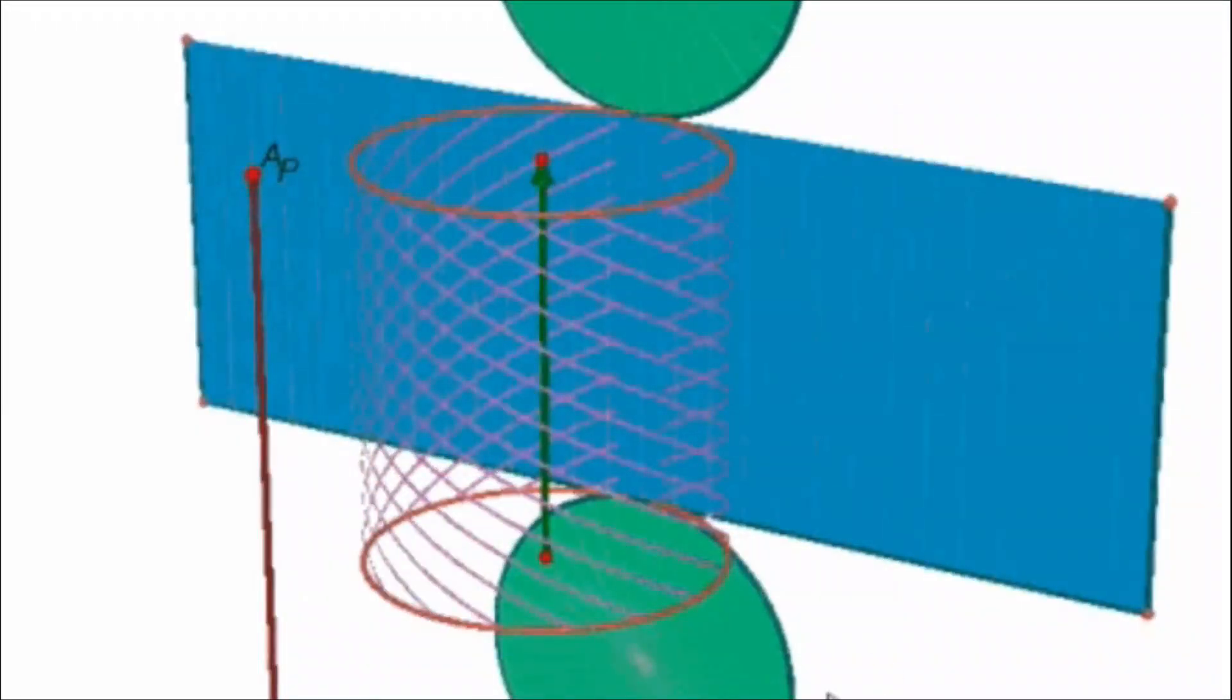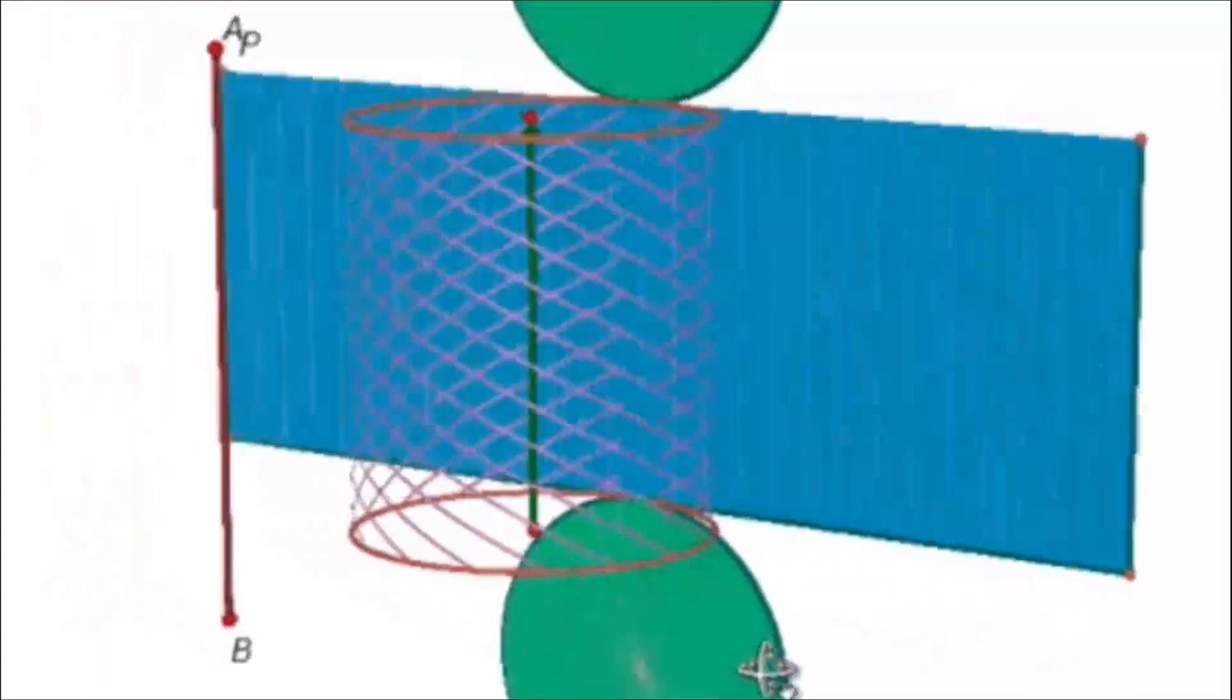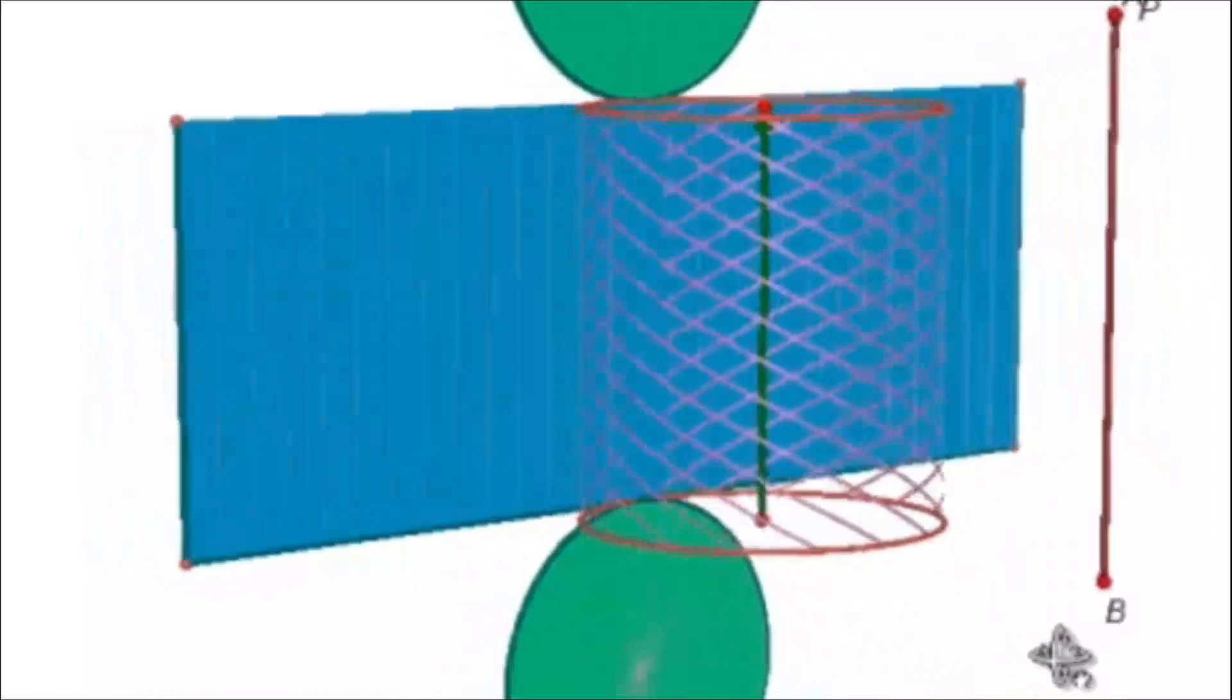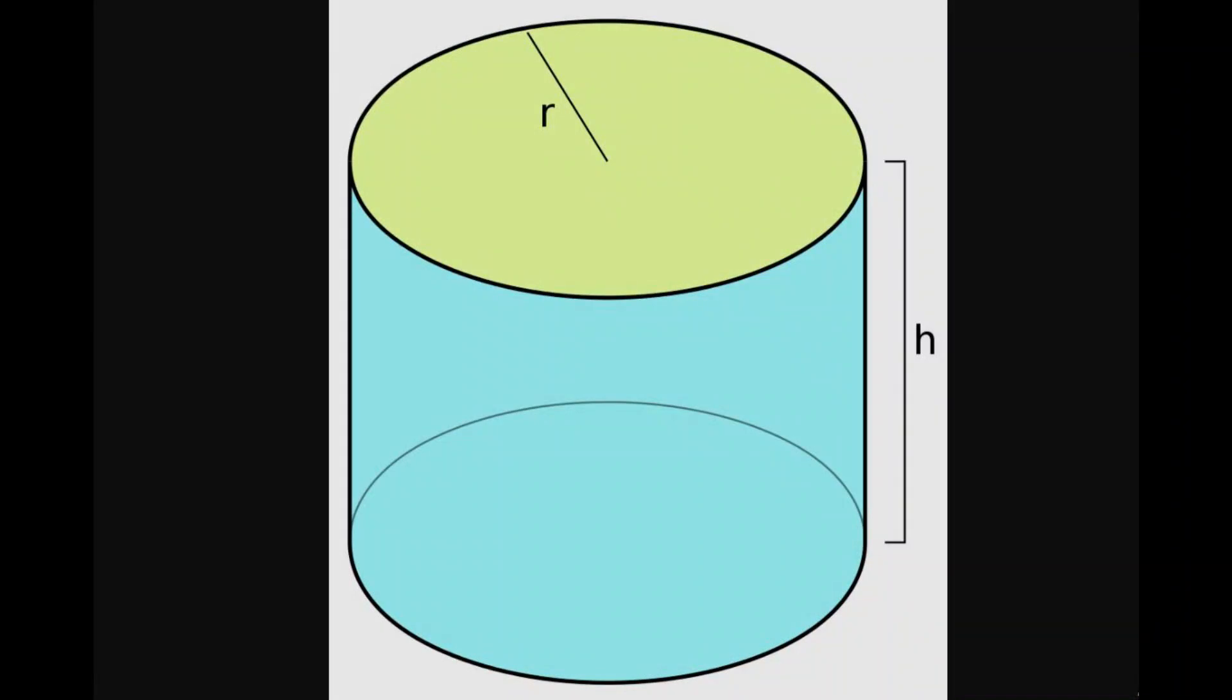In mathematics, the cylinder is considered to be a solid shape and its volume can be calculated using the formula v equals pi r squared h, where r is the radius of the circular base, h is the height of the cylinder.